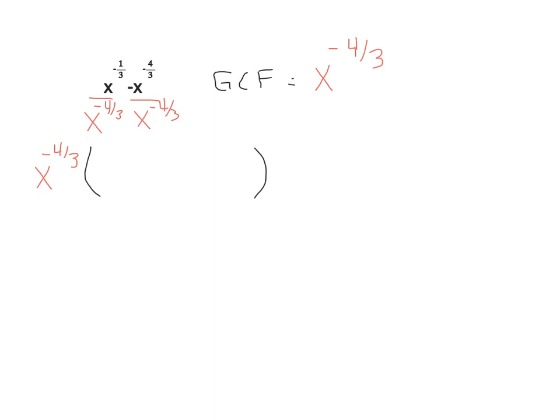So when we take a look at the first term, we have like bases connected with division. When we have that situation, we keep the base, which would be x, and raise it to the power by subtracting the exponents. So off to the side, we have negative one-third in the numerator minus negative four-thirds in the denominator.